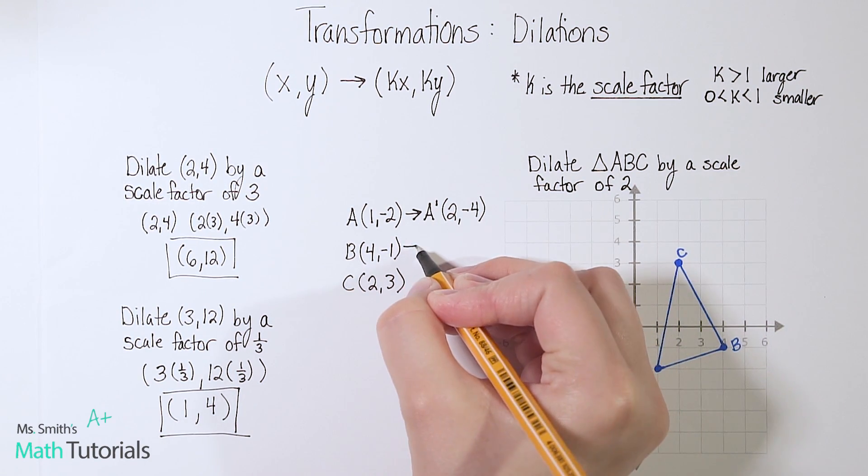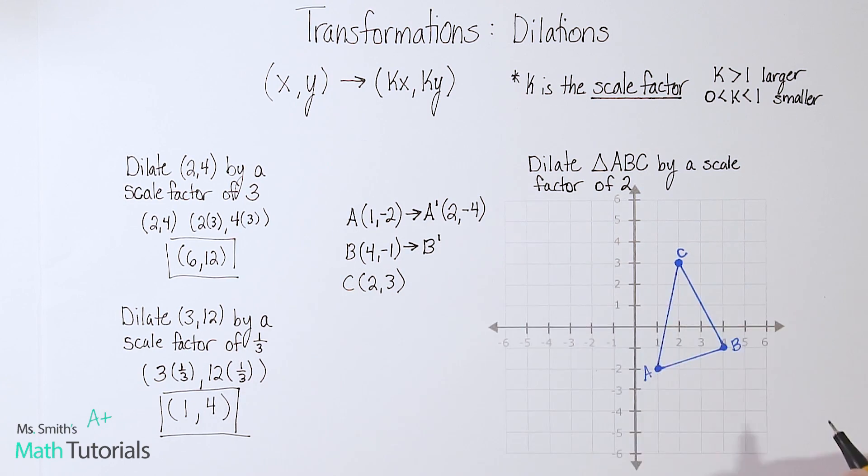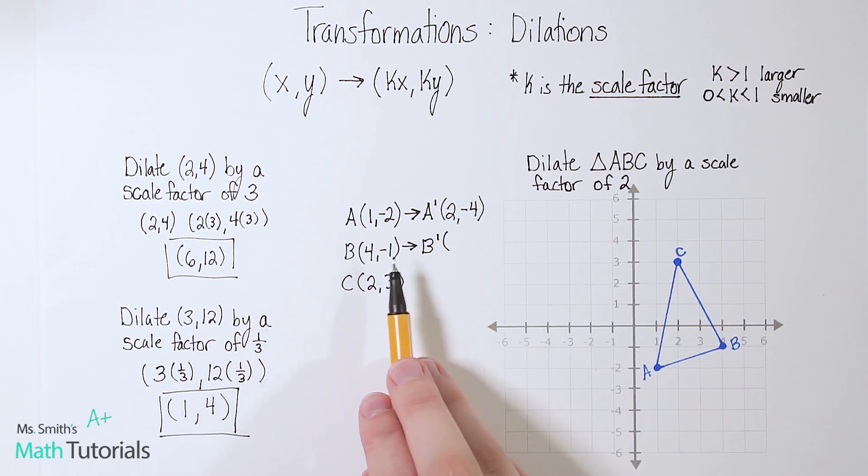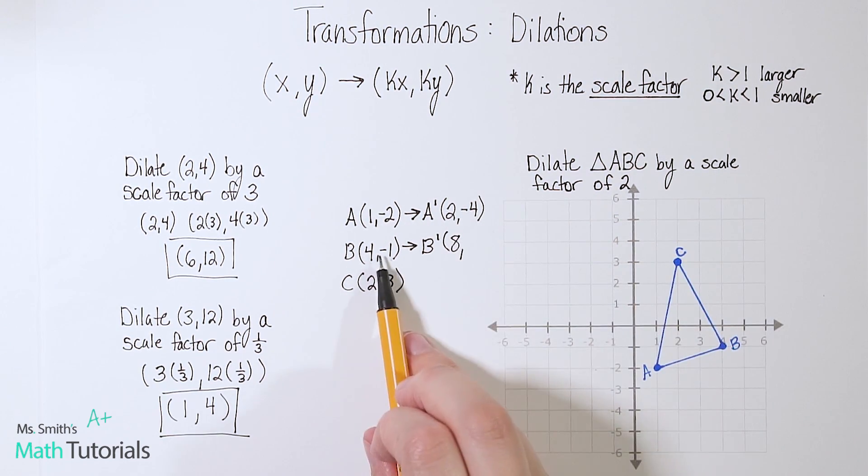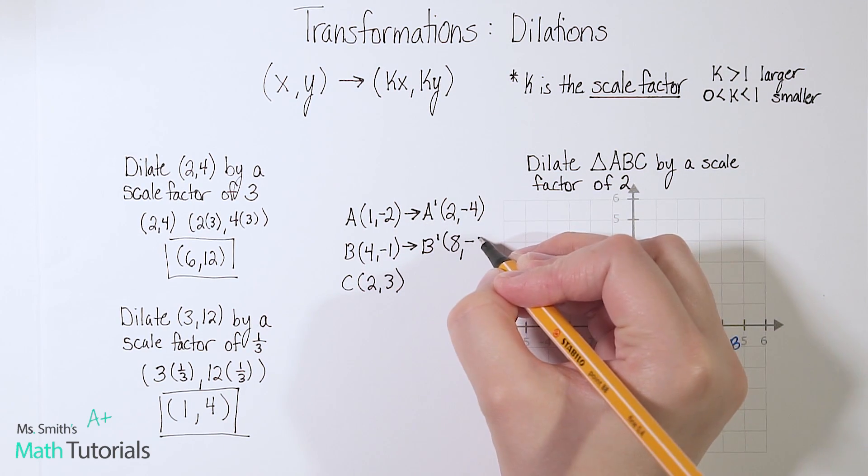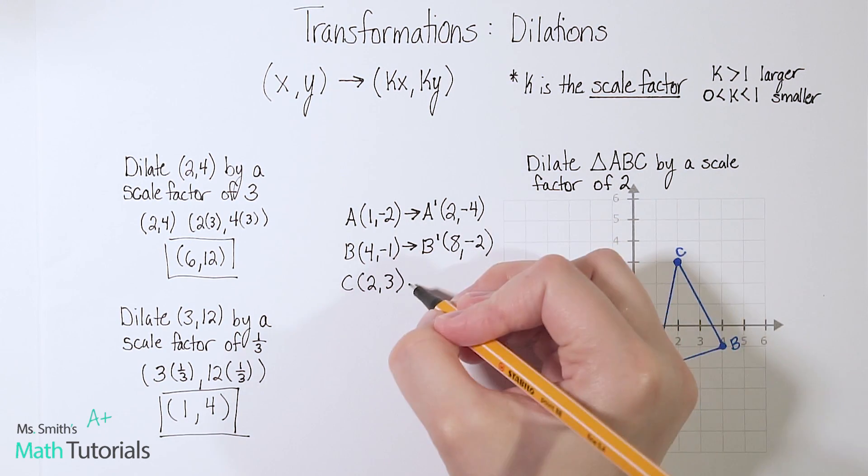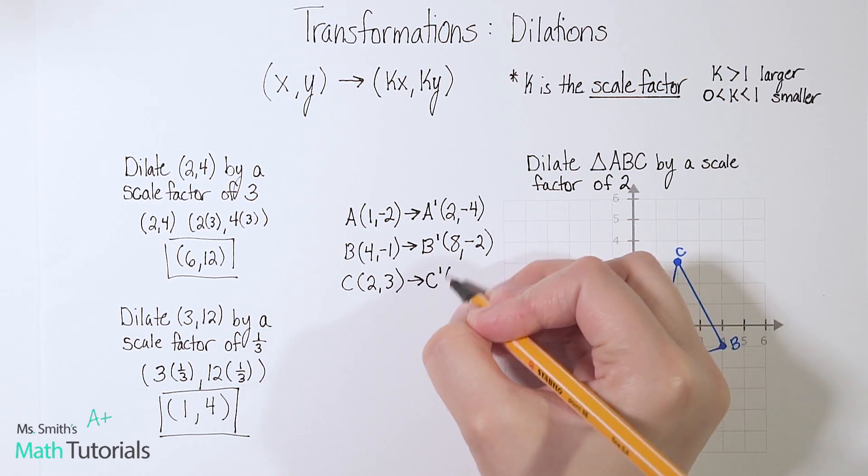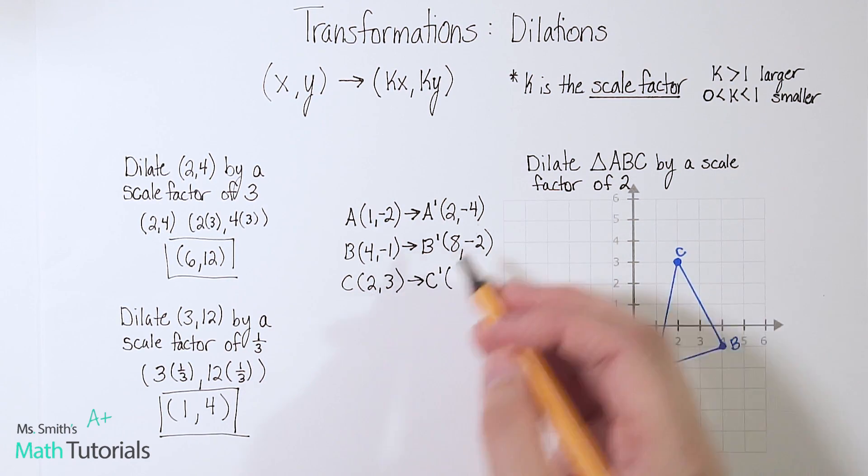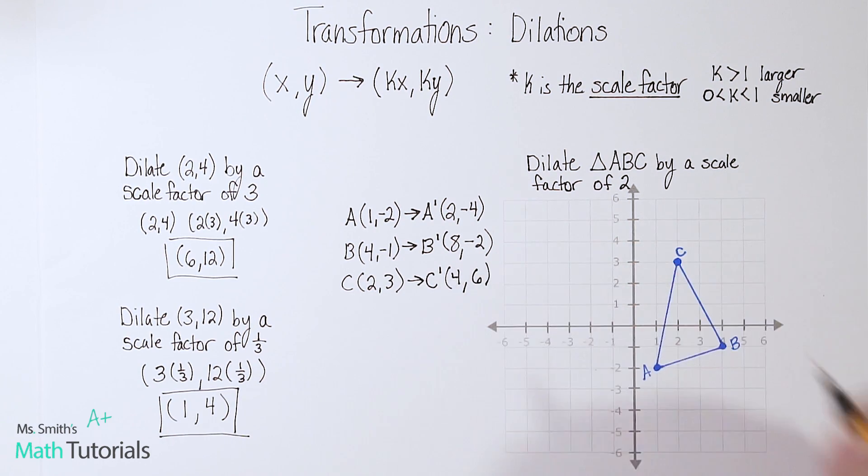So let's do the same thing with B. We'll call this B prime. So 4 times 2 is going to be 8, and negative 1 times 2 is going to be negative 2. All right, and now we'll do our new C. C prime is going to be 2 times 2 is 4, and 3 times 2 is 6.